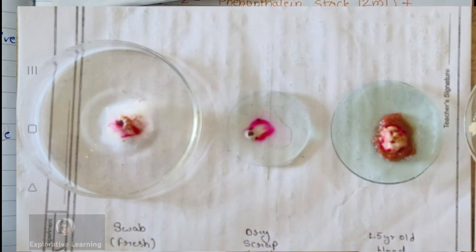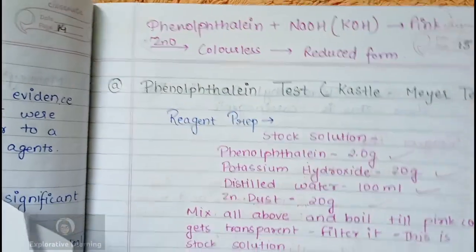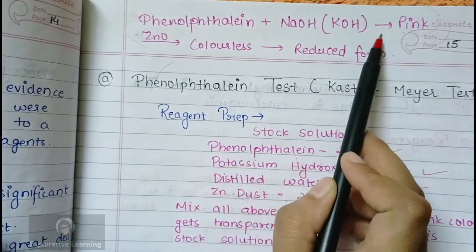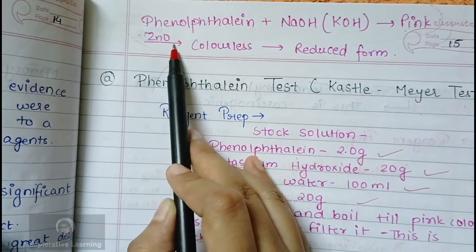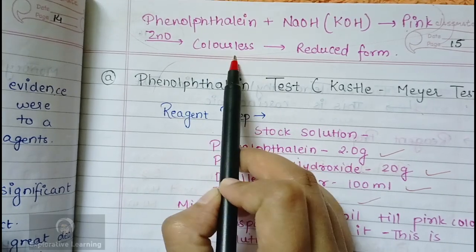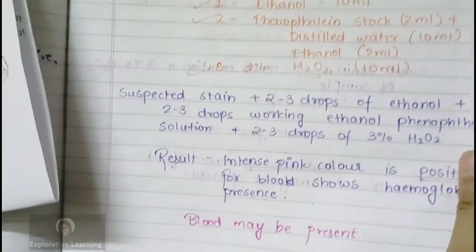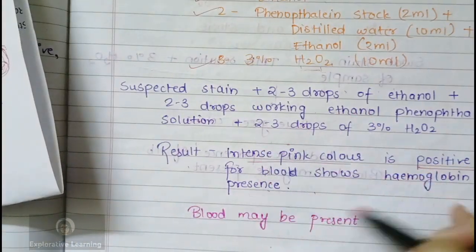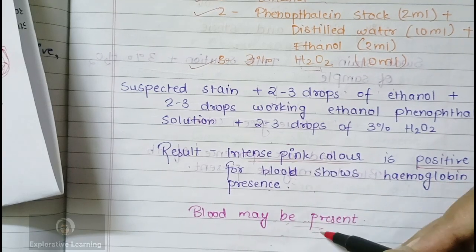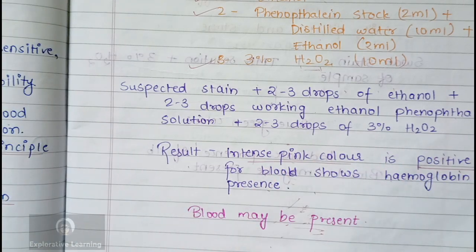Here is how the reaction works: phenolphthalein reacts with NaOH (a base) — in the presence of a base, phenolphthalein gives a pink color. Zinc oxide keeps it in reduced state, turning the pink solution colorless, indicating the reduced form. When the procedure is followed, an intense pink color is obtained, showing that blood may be present. However, we cannot say with certainty that blood is present because this is a presumptive test, not a confirmatory test.